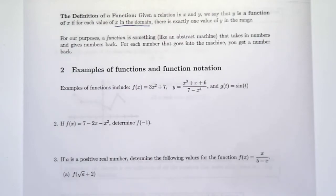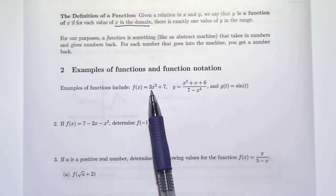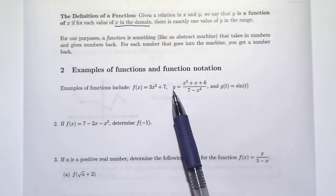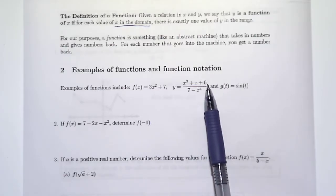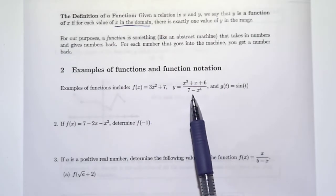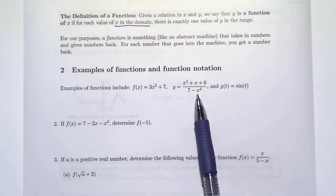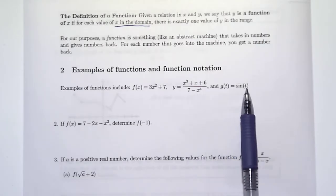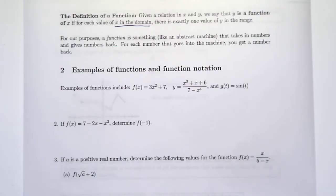Now we're going to talk about some examples of functions and how to use function notation. Here are some examples: f of x equals 3x squared plus 7; y equals x to the third plus x plus 6, all over 7 minus x to the fourth; and g of t is sine of t. These are all functions written in function notation.